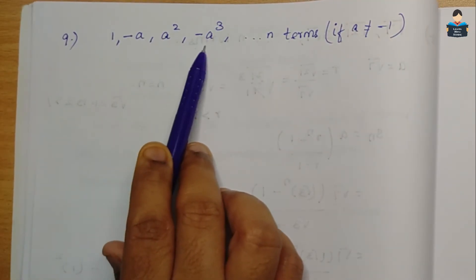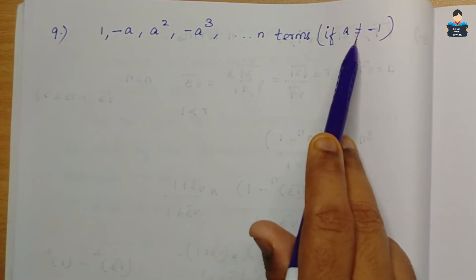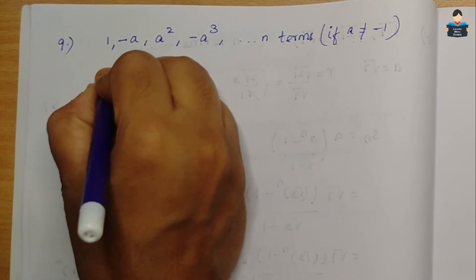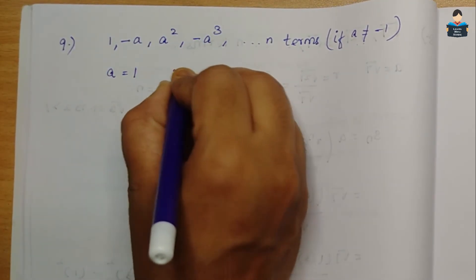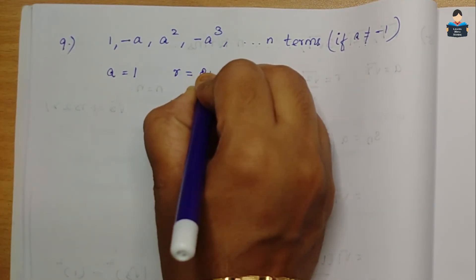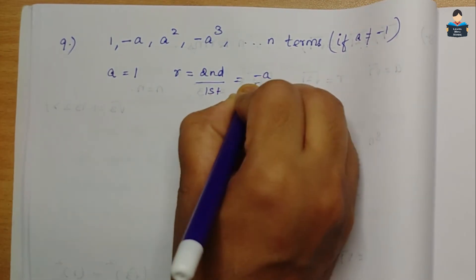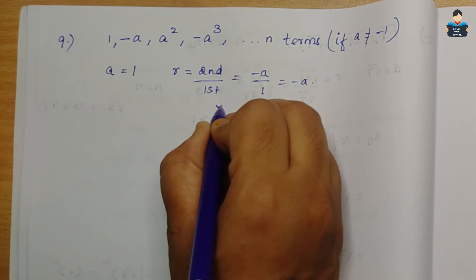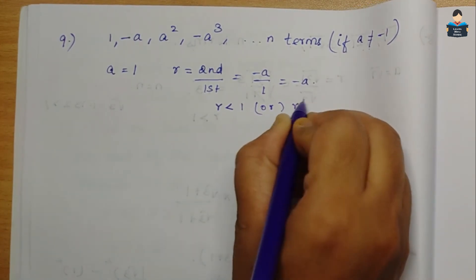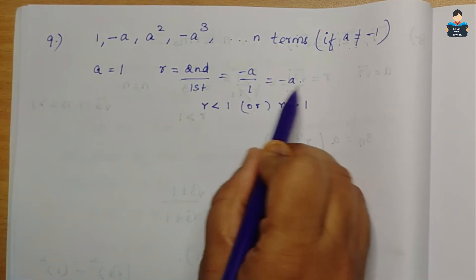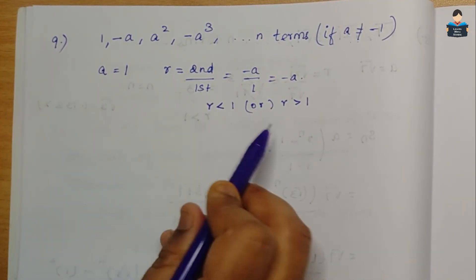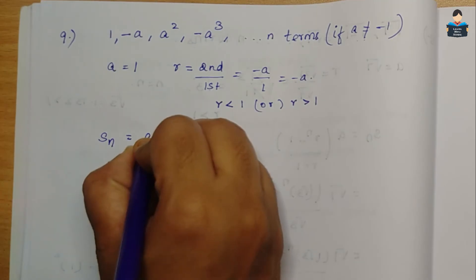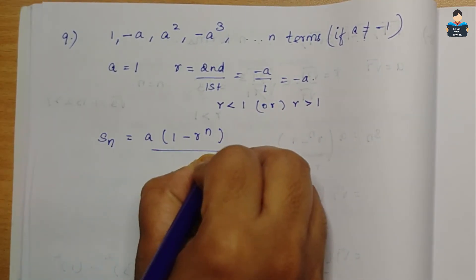9th question: find the sum of 1, −a, a², −a³, ... up to n terms, where a ≠ −1. First term is 1. Common ratio r = second term / first term = (−a)/1 = −a. Since a is a variable, we do not know whether r is less than or greater than 1.